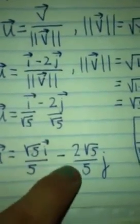And we do that by multiplying the top and the bottom by square root of 5. So the top is going to be square root of 5 vector i over 5 minus 2 square root of 5 over 5j.